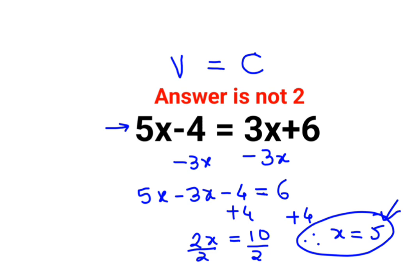For the LHS: 5 multiplied by 5 minus 4, that is 25 minus 4, which equals 21. For the RHS, we have 3 multiplied by x.